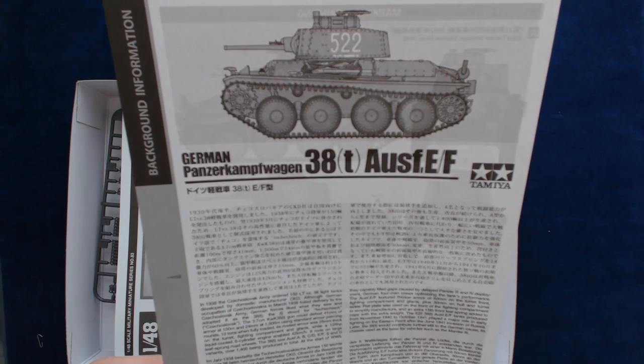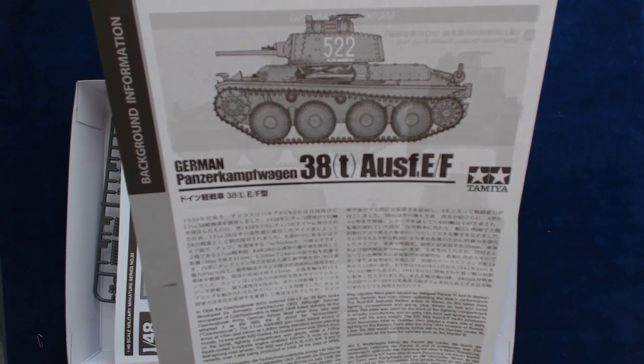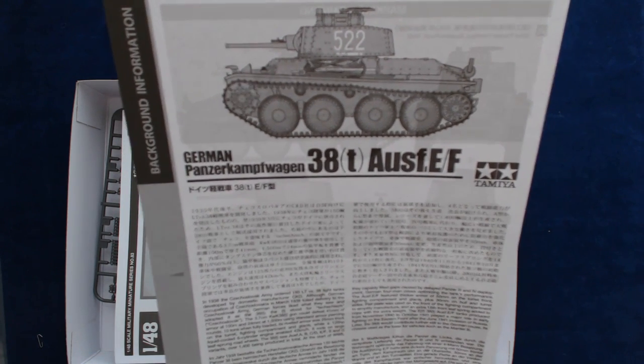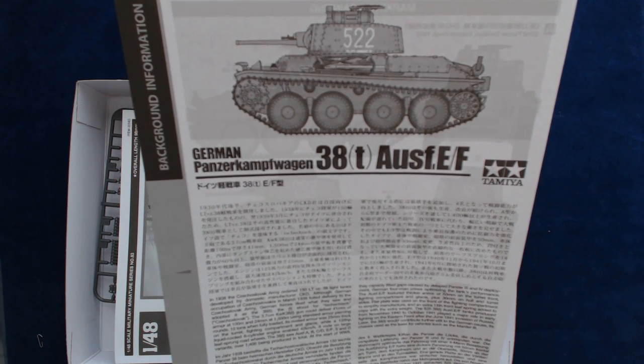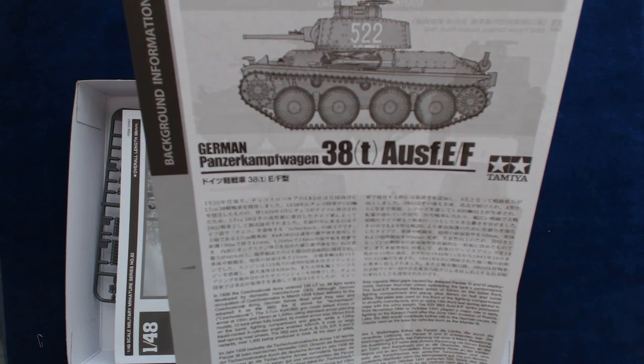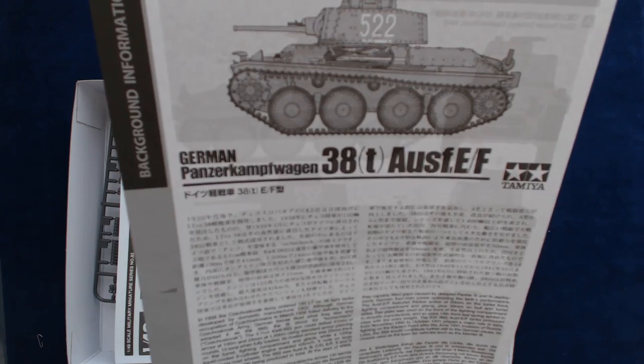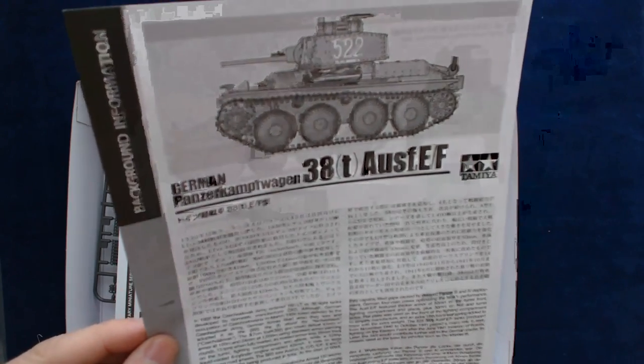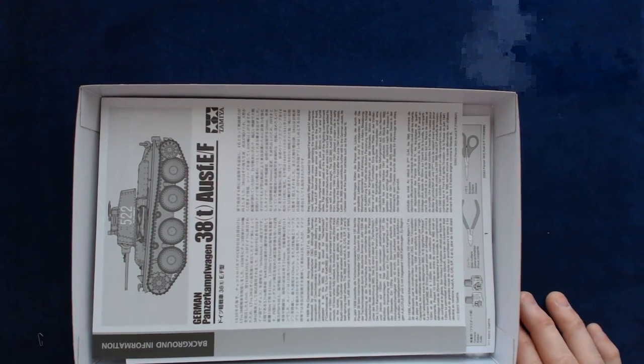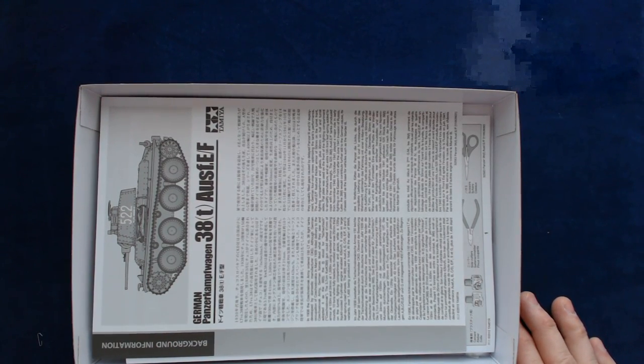The Czechoslovak army ordered 150 LT vz.38 light tanks developed by domestic manufacturer CKD. So, anyways. All right, well, let's take a look at some of the close-up photo details of these parts, and we'll come back and conclude.